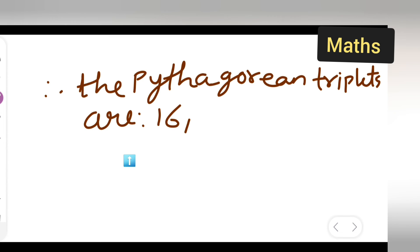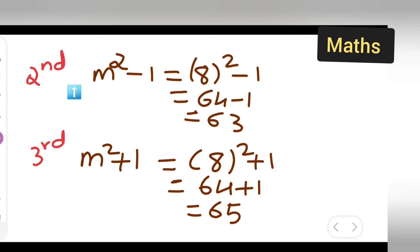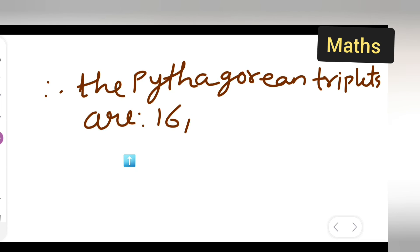The other one will be 63 and 65. So write down over here: 63 and 65. Now these 16, 63, and 65 are your Pythagorean triplets.